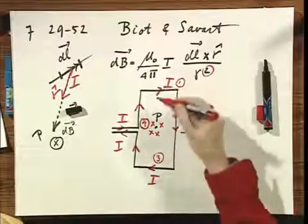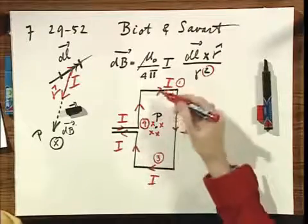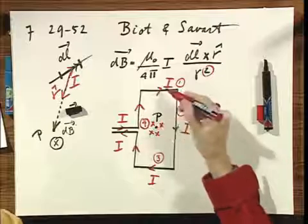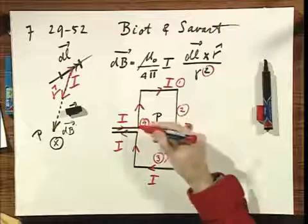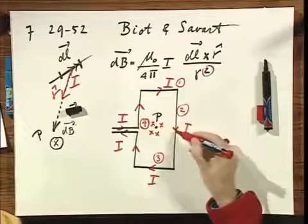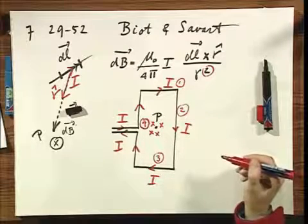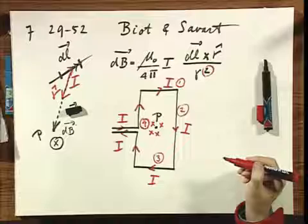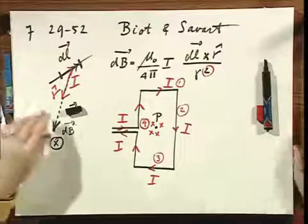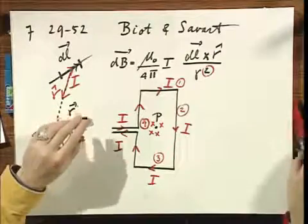Now, one and three will have obviously exactly the same effect. So it's enough that you only calculate one and double it. Two and four also have the same effect in magnitude and in direction. So it's enough that you calculate two and double that if you so desire. I will set up the situation in general terms and then I will leave you alone with the details.